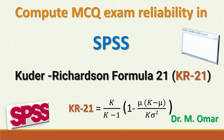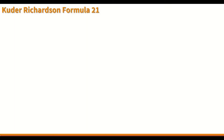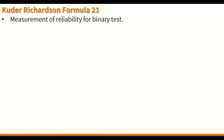Computing multiple choice question exam reliability in SPSS using Kuder-Richardson Formula 21, abbreviated as KR21. The formula calculates the reliability of binary tests. Binary means that it's dichotomous — only two options — such as multiple choice questions where the answer can be either correct or incorrect. Correct is given a value of 1, and an incorrect answer is given a value of 0.